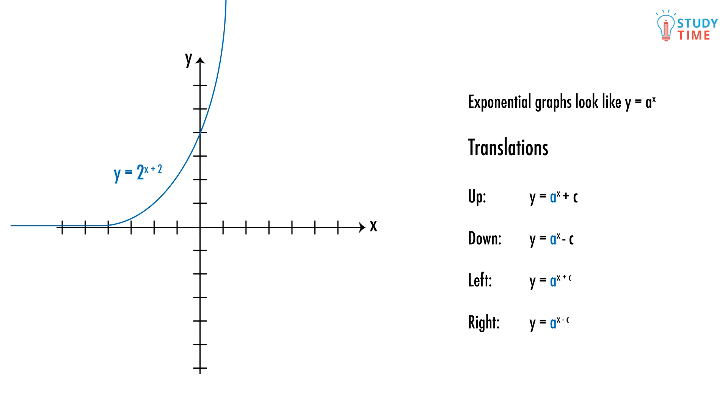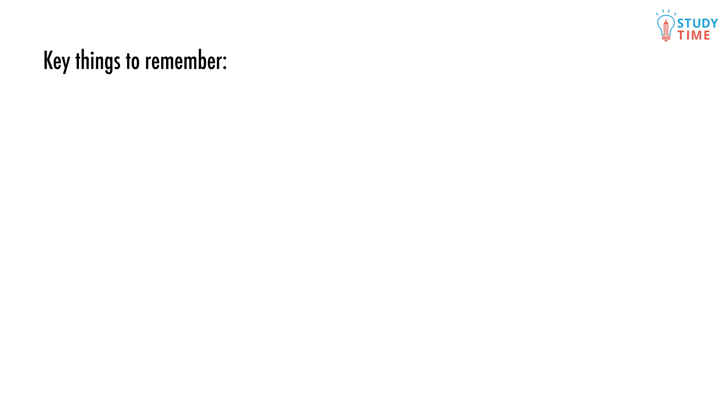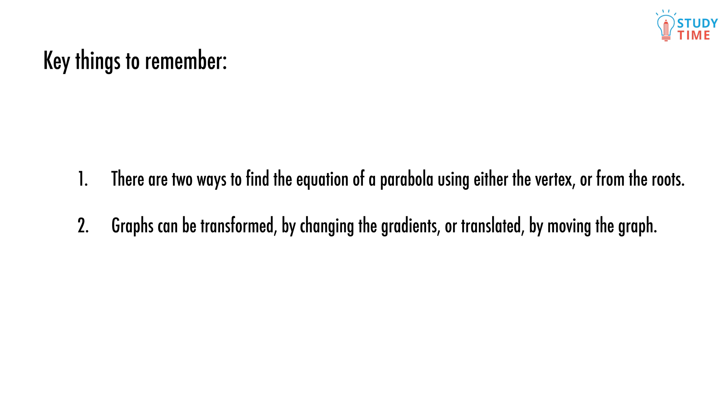Here are some key things to remember: There are two ways to find the equation of a parabola, using either the vertex or the roots. Graphs can be transformed by changing their gradients or translated by moving the graph left, right, up, or down. Remember to use the opposite signs when putting your translations inside brackets.